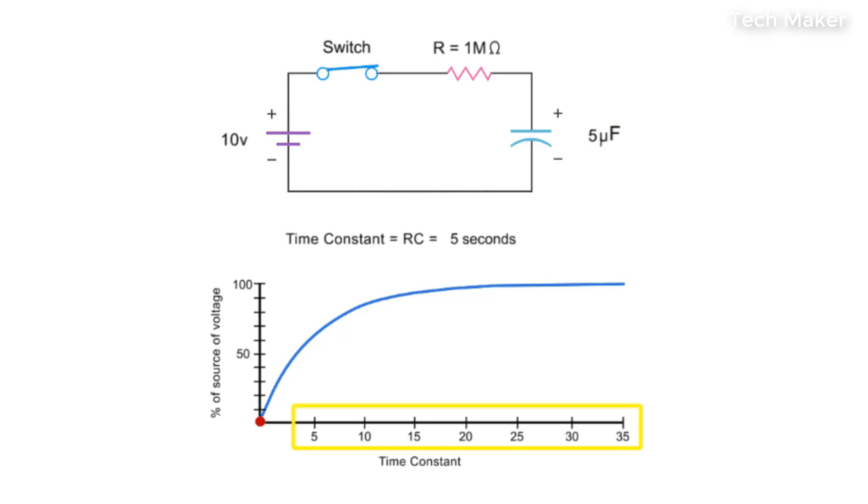Therefore, for each 5 seconds of elapsed time, the capacitor will achieve its corresponding voltage percentage until it reaches an effective charge after five time constants.